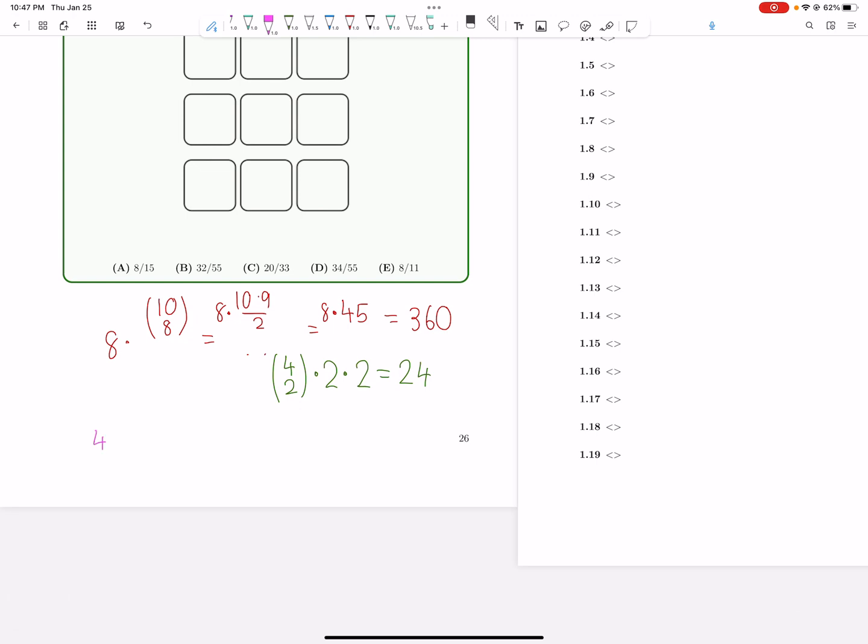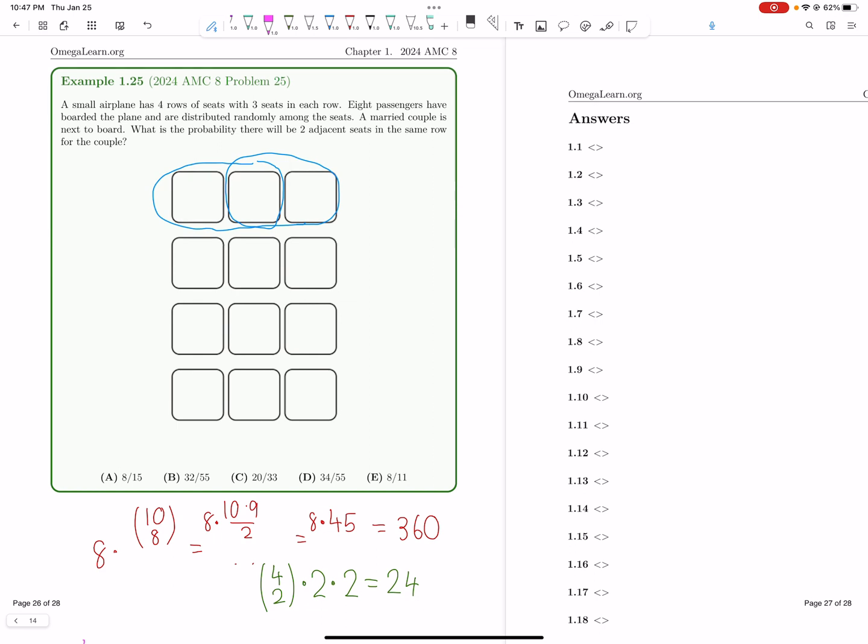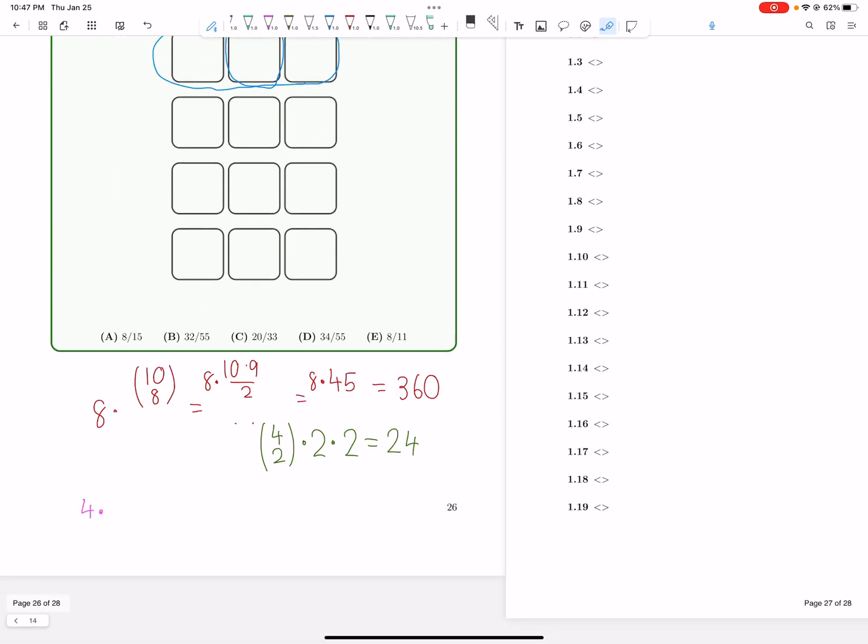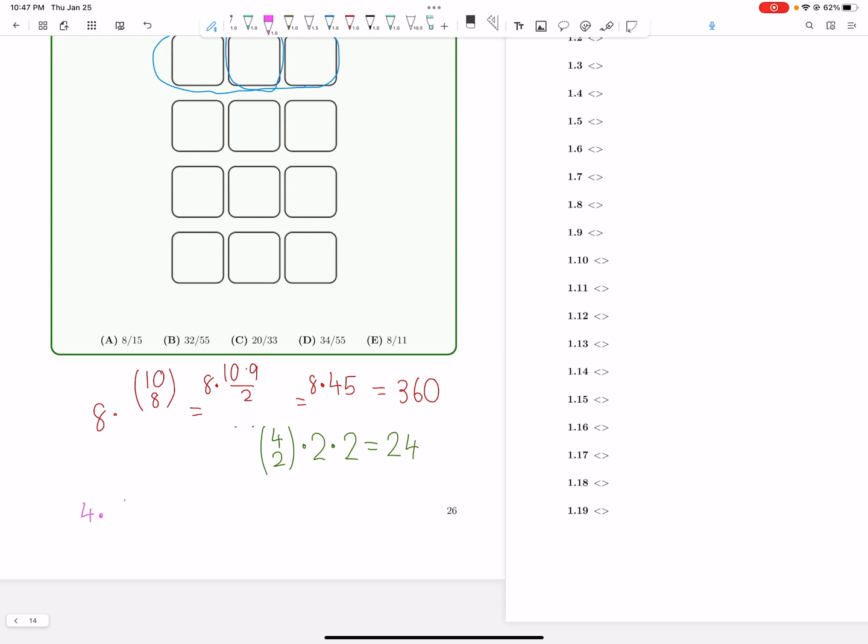How many ways are there for this to happen? Well, there's four ways to pick which row is going to be completely empty. And then now, take a look. We've got nine spots left and eight people. So, the eight people can sit at any of these nine spots. That's nine choose eight. And nine choose eight is the same as nine choose one, which is nine. So, this is just 36 ways. So, in total, we have 360 ways, except we over-counted a total of 24 plus 36, 60 ways.